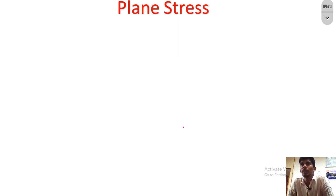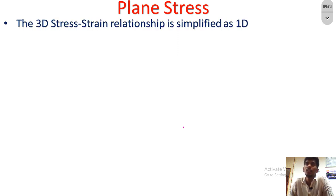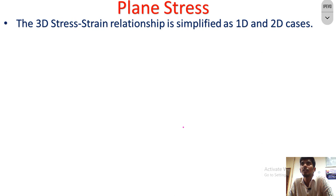We come to the simple definition and explanation of plane stress. Every three-dimensional object in a structural problem — even in material or any structural related component — can be simplified as one-dimensional or 2D cases because of its complex nature. In a complex three-dimensional object, solving for unknown parameters such as displacement, velocity, acceleration, temperature, or nodal values is very difficult due to the large number of unknowns and equations. For that reason, we convert the entire three-dimensional relationship into one-dimensional or 2D cases.